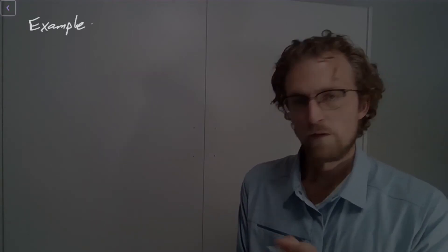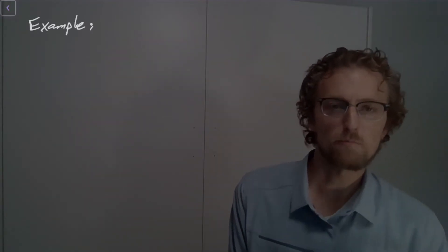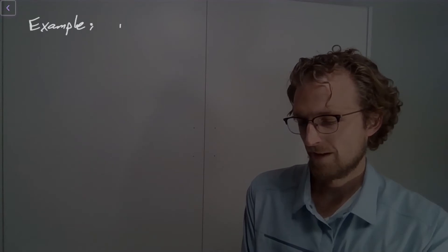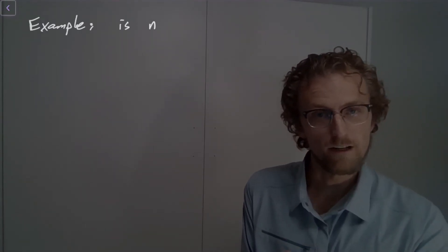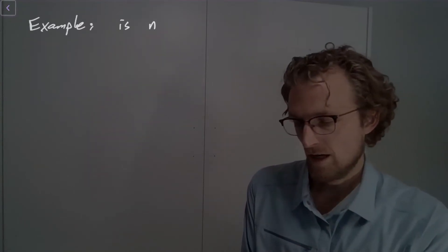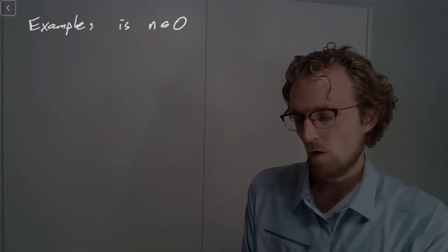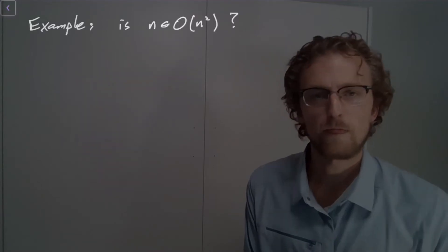So here's an example that we could work out. So let me ask, is the following function big O of n squared? So is n, right, that's a function of n, it's just a straight line function of n, is n big O of n squared, right?